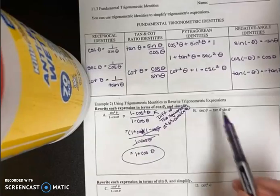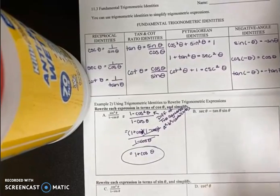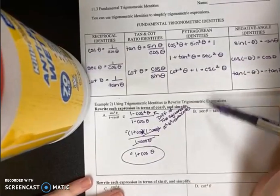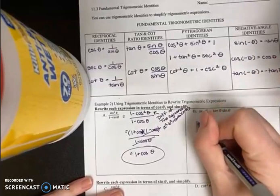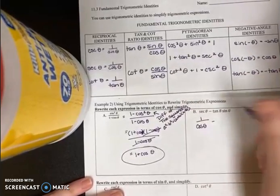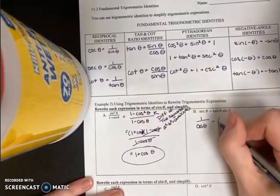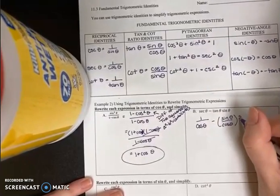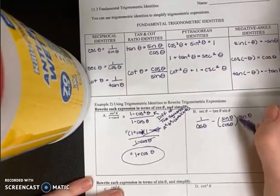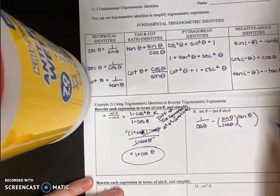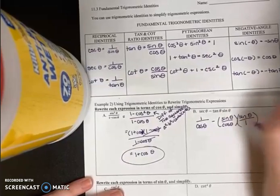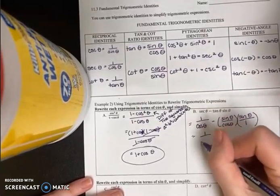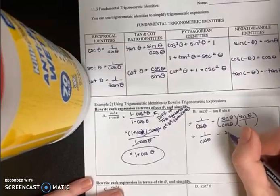If you take a look at part B, none of these functions are cosine, so I'm going to have to rewrite all of them. Secant is the reciprocal of cosine, so I'm going to rewrite that as one over cosine theta, minus tangent. We know tangent can be rewritten as sine theta over cosine theta, and I'm currently multiplying that by sine theta. So if you want to note that sine theta is technically over one, you can see we have one over cosine theta minus sine squared theta over cosine theta.